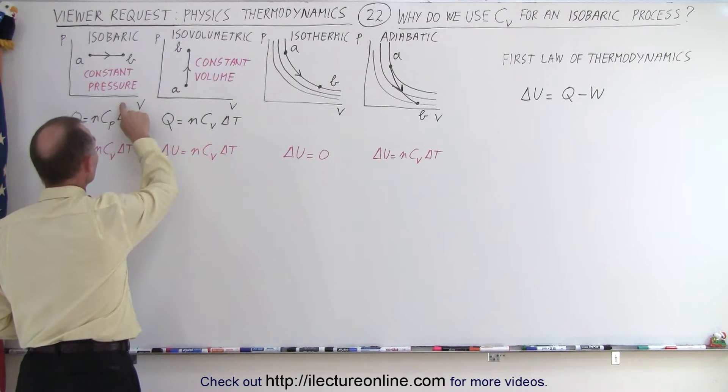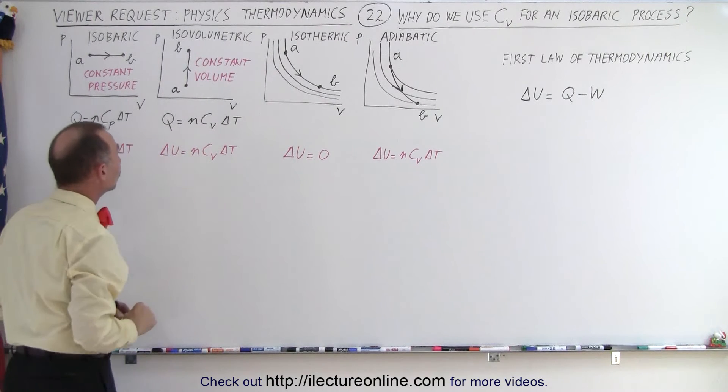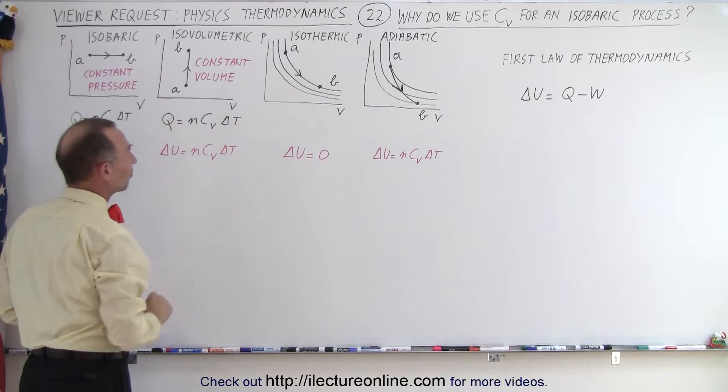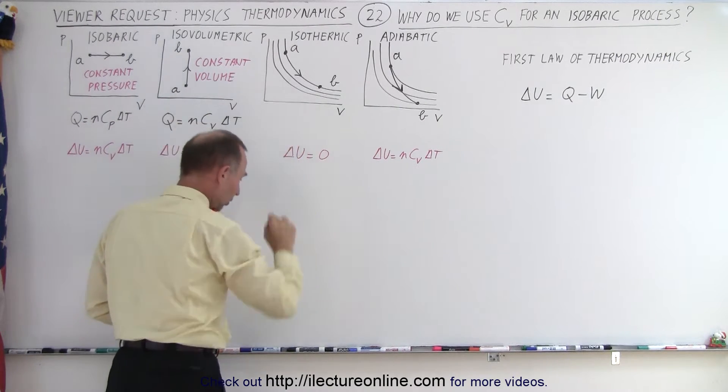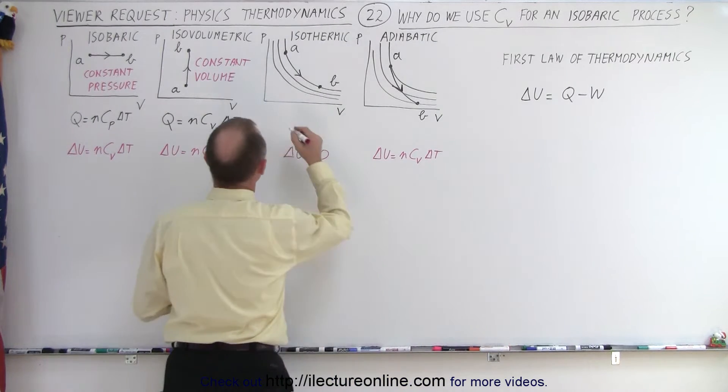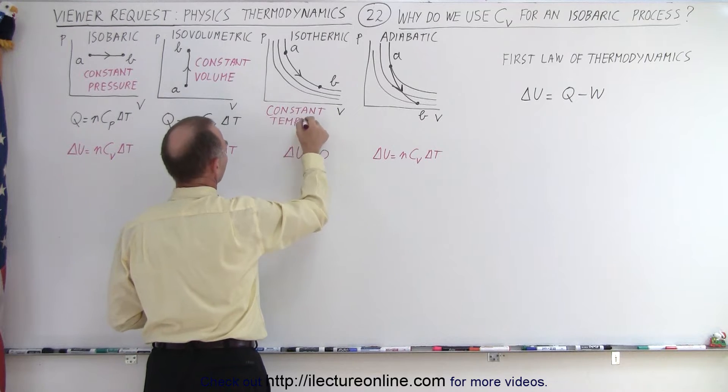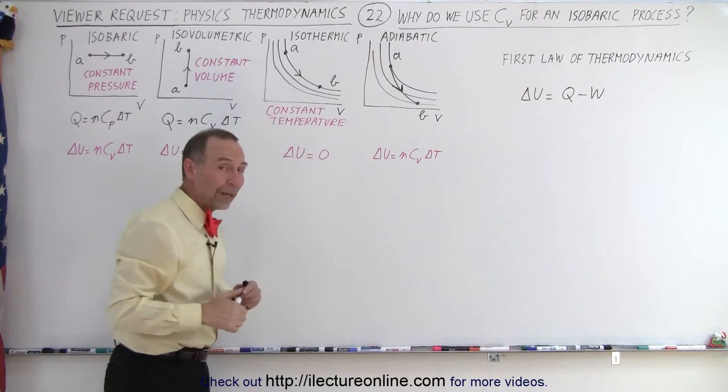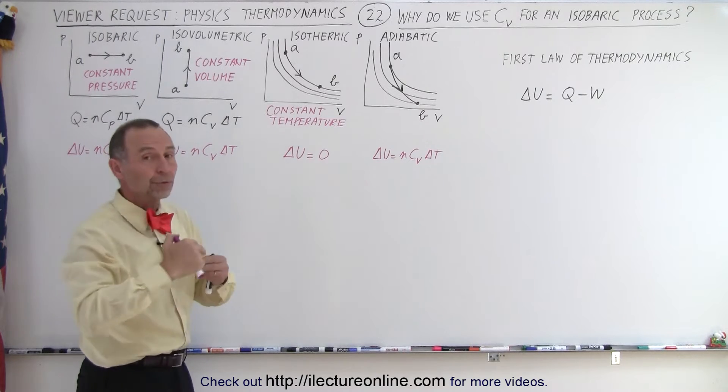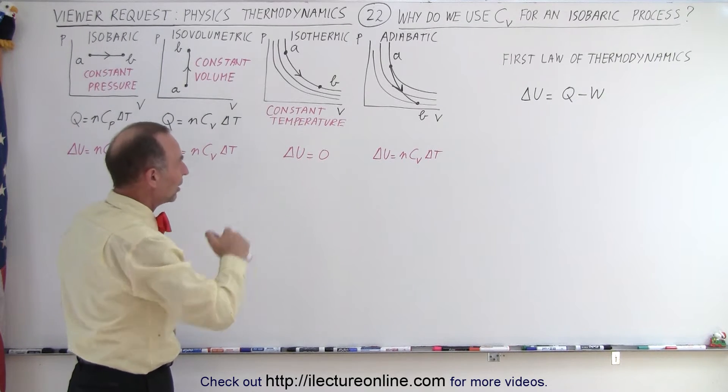When it comes to an isobaric process, notice we have a constant pressure. For isovolumetric process, we have a constant volume. And for isothermic process, and I did not write that down, we have constant temperature. And also notice we have the first law of thermodynamics that relates pressure, volume, and temperature to one another in any one of these processes.